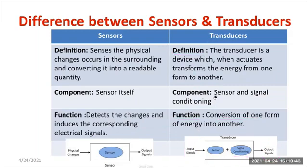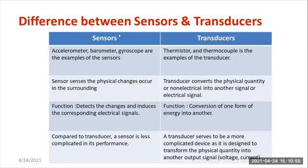Sensors and transducers are both different, but a sensor is a part of a transducer. What are the examples of sensors? Accelerometer, acceleromyograph, barometer, and gyroscope are all examples of sensors. If you add a signal conditioning device along with the accelerometer or acceleromyograph, then it becomes a transducer. So a sensor is a part of a transducer.